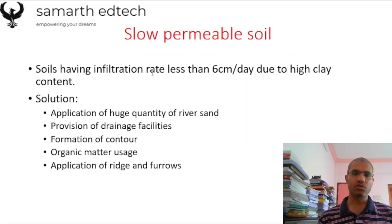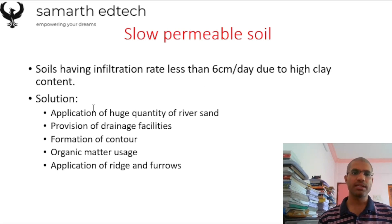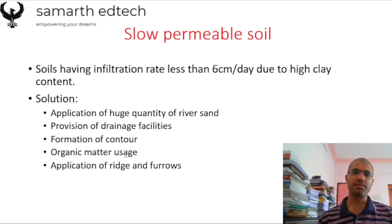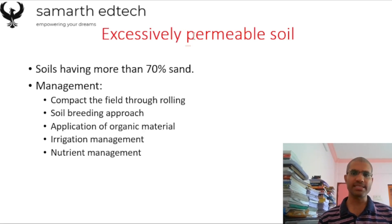The first physical problem soil is slow permeable soil, where water infiltration is less than six centimeters per day. Solutions include applying a large quantity of river sand, providing proper drainage facilities, forming contours, using organic matter, and applying rigid furrows in order to reduce the problem of slow permeable soils.